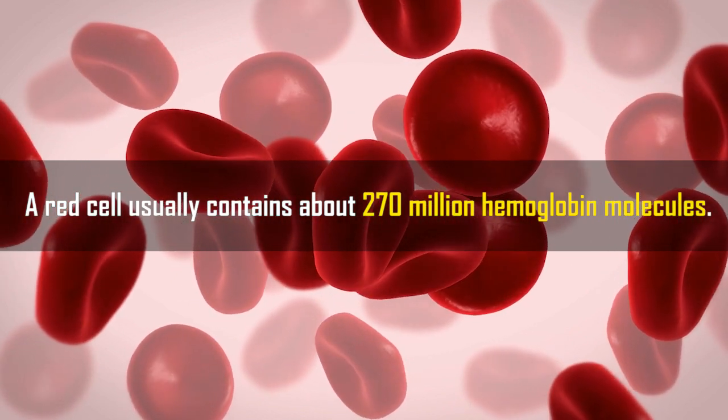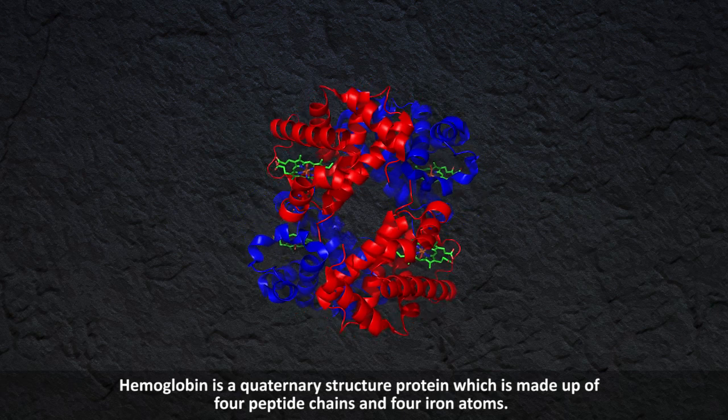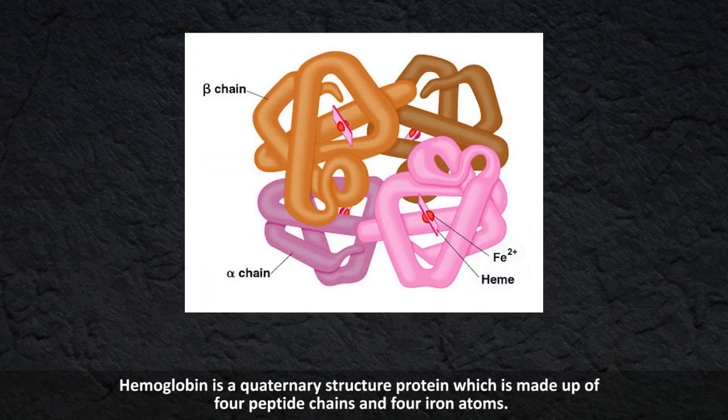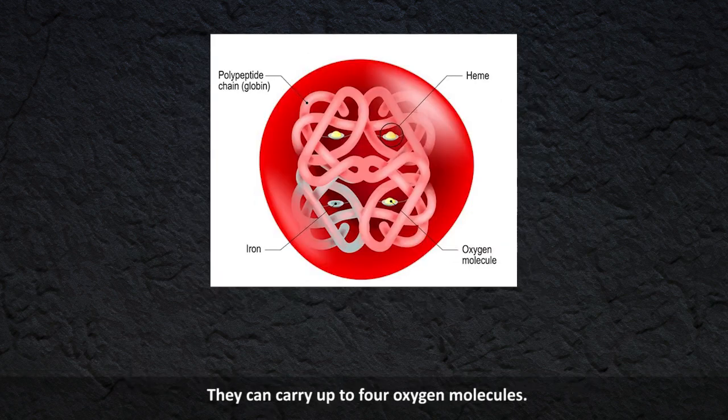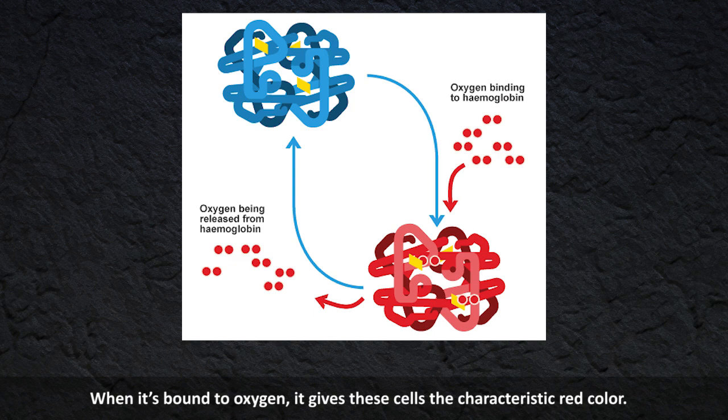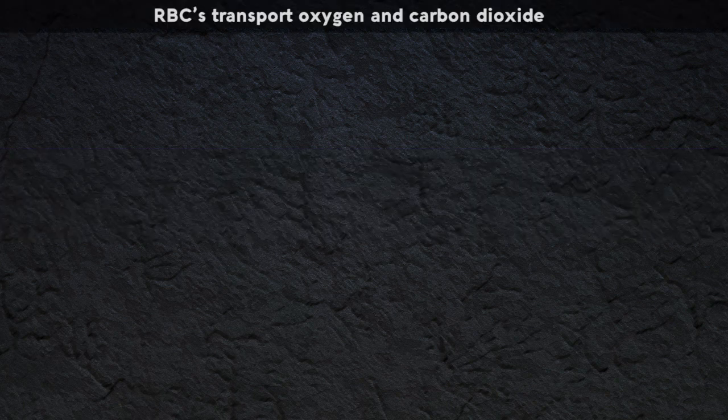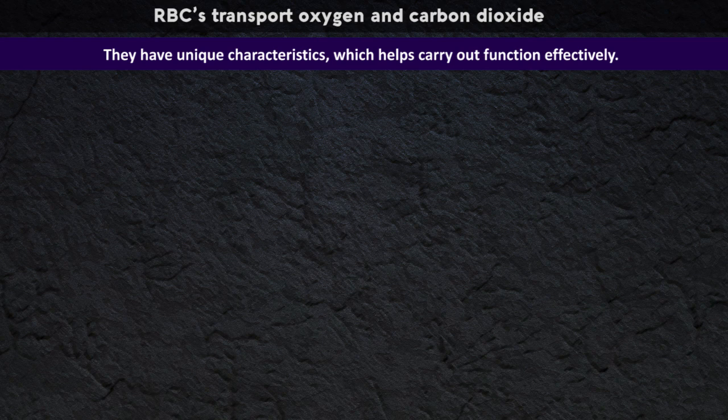Hemoglobin is a quaternary structure protein which is made up of four peptide chains and four iron atoms. They can carry up to four oxygen molecules. When it is bound to oxygen, it gives these cells their characteristic red color. Adaptations: Red blood cells transport oxygen and carbon dioxide. They have several unique characteristics which help them carry out this function effectively.